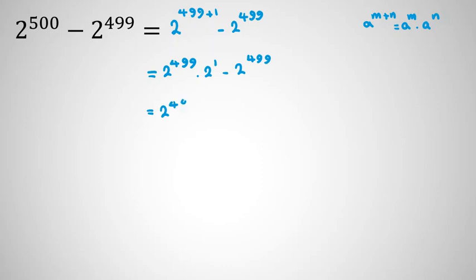And it is 2 to the 499 times 2 to the 1 minus 1. 2 minus 1 is 1 so it is 2 to the 499. So our answer is 2 to the power of 499.